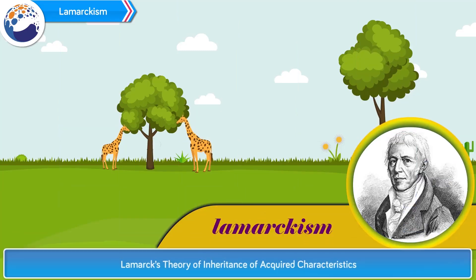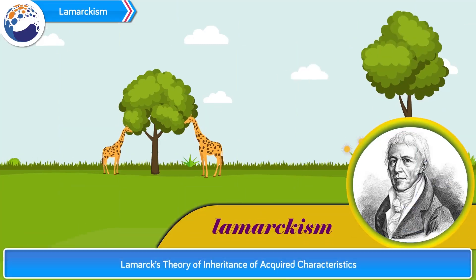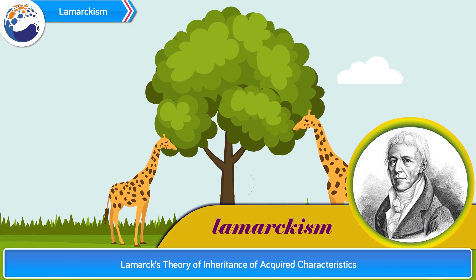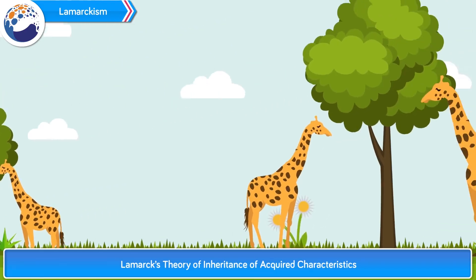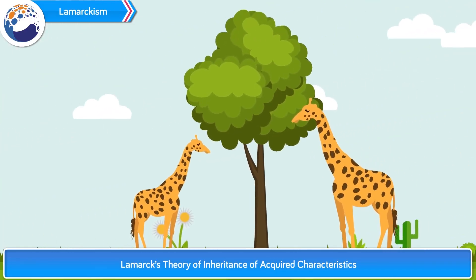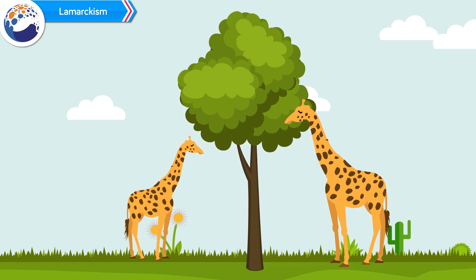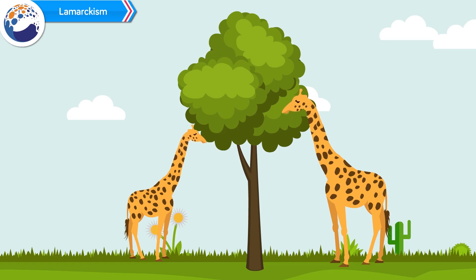Lamarckism: Lamarck believed that characters acquired during the life of any organism are passed on to its offspring. This theory is referred to as Lamarck's theory of inheritance of acquired characteristics. According to Lamarck, the neck of the giraffe has become too long due to browsing on leaves of tall plants by extending their neck over several generations.